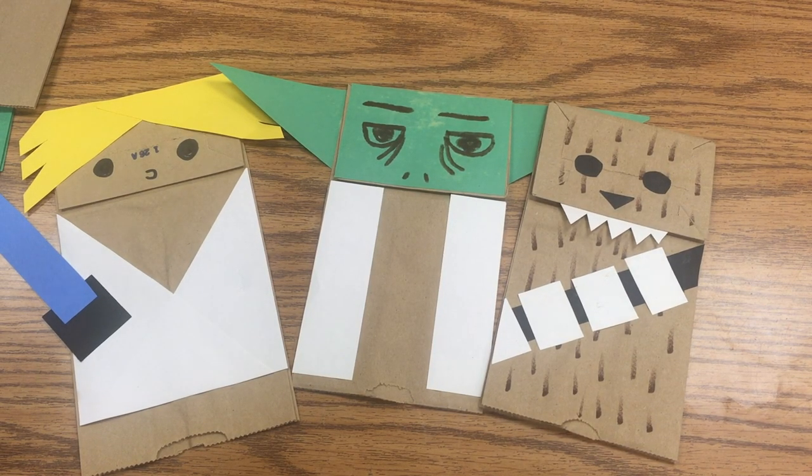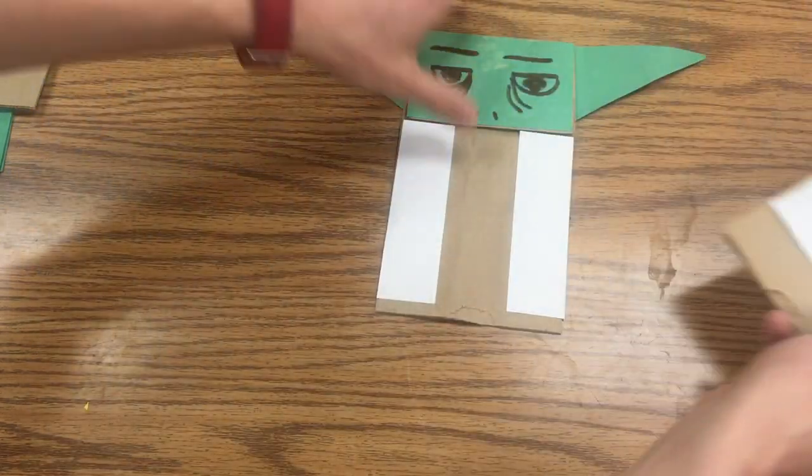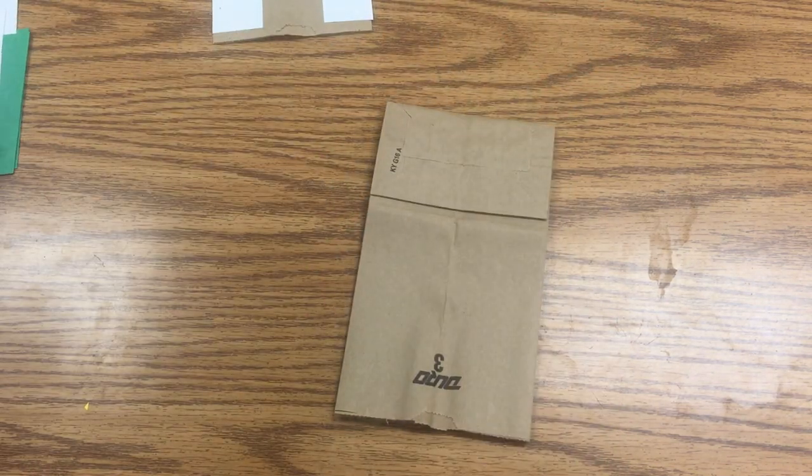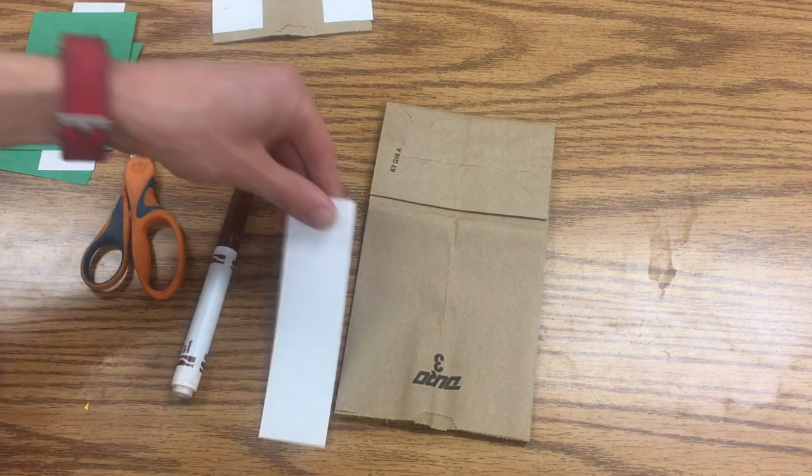Hey everybody, we're gonna make Star Wars puppets today and we're gonna start with Yoda. So we're just gonna take a brown paper bag here and we're going to put his robe on by taking these two white strips.